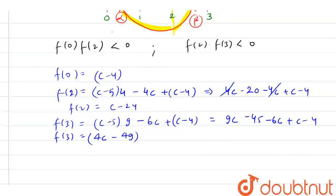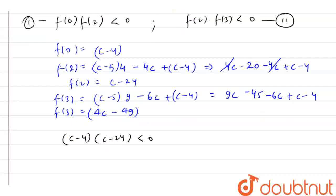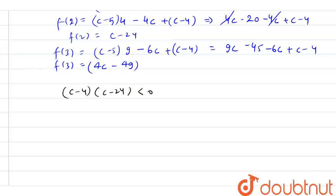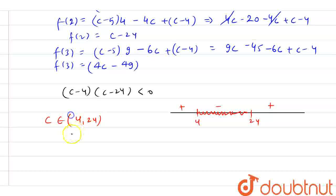Now if I put all these values in my equations, the value of f(0) is c - 4, value of f(2) is c - 24, and this value is less than 0. Now let's find out the values of c from here. If I draw the number line again, then c lies between 4 to 24 and the product of these two numbers is negative. This is positive, negative, and positive by using the wavy curve method. So I can say c belongs to (4, 24).